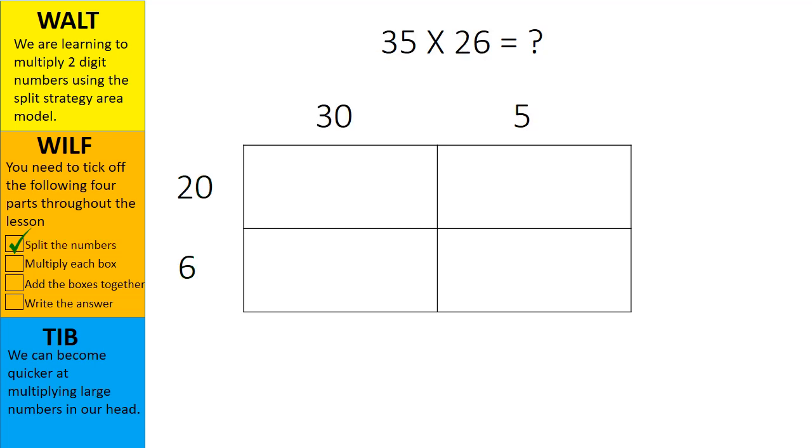Now I'm ready to multiply my numbers together. This is the second part of the what I'm looking for checklist. I will now multiply the first lot of numbers together, 20 multiplied by 30. This may seem hard but there is a trick to help us out. I'm going to cover up the zeros in this number sentence. I will need to add them back on later. This now makes my number 2 multiplied by 3 which equals 6. I'll write the answer in the first box.